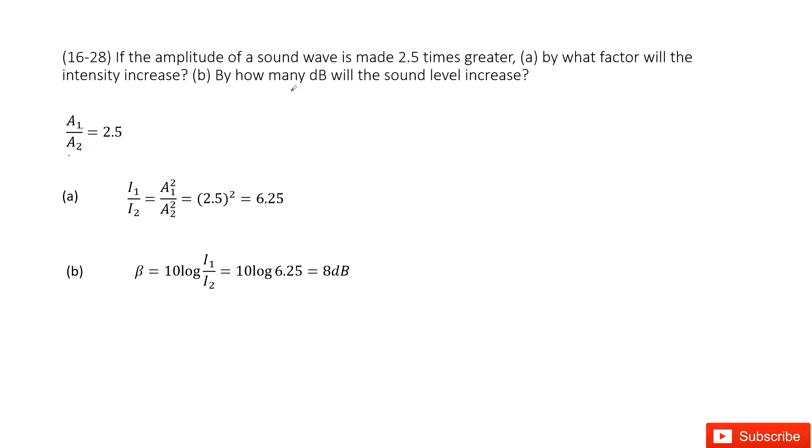Next, it asks how much the sound level increased. For sound level, we consider the definition: 10 log I₁ over I₂. This is the final, this is the initial. So we include the intensity ratio, 6.25, and the answer is 8 dB. Thank you.